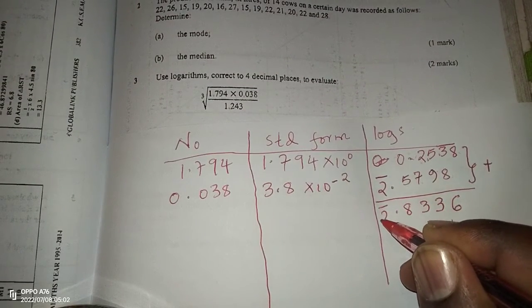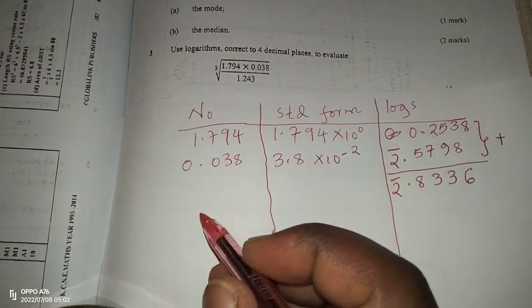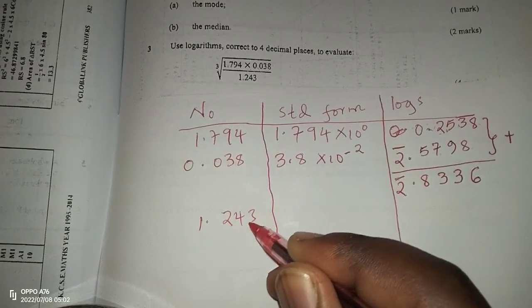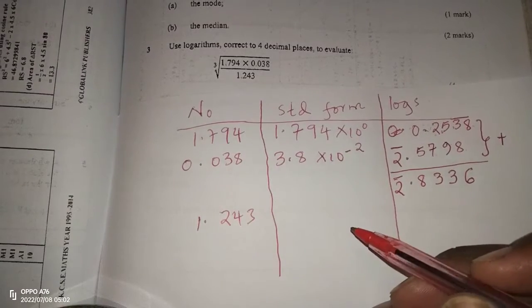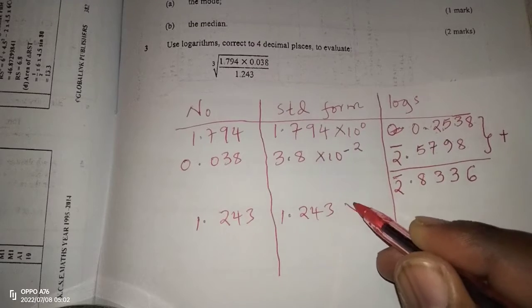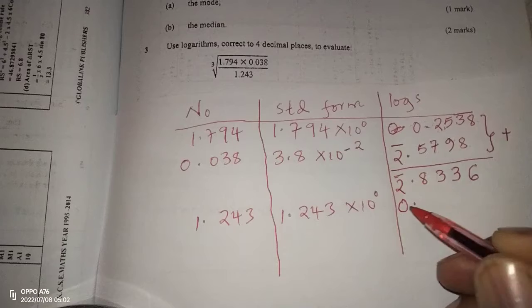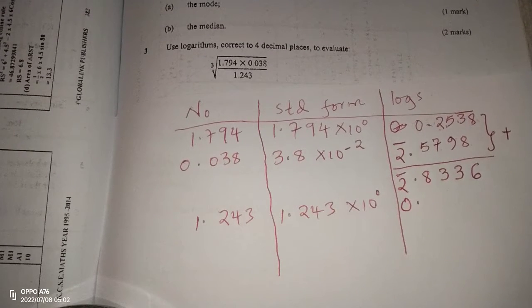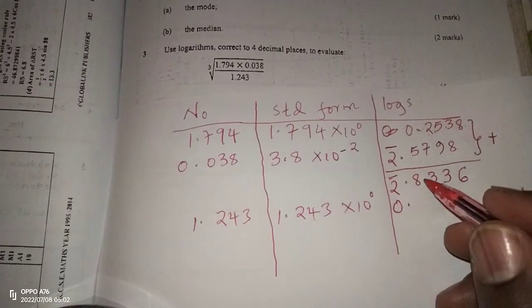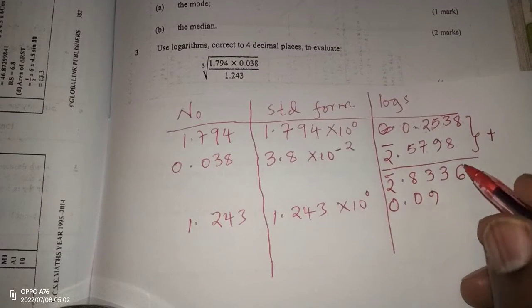Then we proceed to the denominator now, which is just 1.243. So 1.243 remains 1.243 times 10 power 0. So this becomes 0 point. We read the logarithm of 1.243. This is 0.0945.